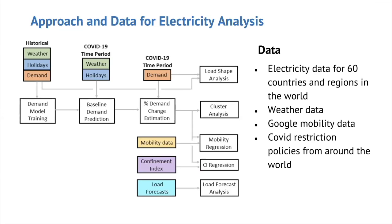The approach we took: to understand how grid demand is changing, you need a counterfactual, because you only observe the change in demand but don't know what would have happened in absence of the change. So the first thing we built is a counterfactual model — a predictive model that predicts electricity consumption every day, week, or month based on historical data before the incident. It allows you to say: if nothing had happened and my predictor is very good, this is what would have occurred. The difference between those two is the change in demand — the percent demand change.